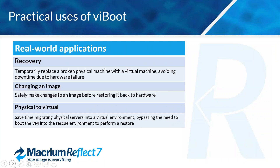So just to explain what Macrium ViBoot is: ViBoot is a feature within Macrium software that enables you to instantly create, start, and manage Microsoft Hyper-V virtual machines using one or more Macrium image files as the basis for the VM storage and subsystem. This allows you to use any backup image you have to run as a virtual machine on a separate piece of hardware in case of physical damage to your machine, reducing the time and cost of not being able to work because your machine is down or has to be sent to IT to be fixed.